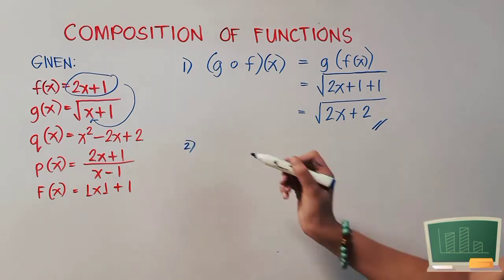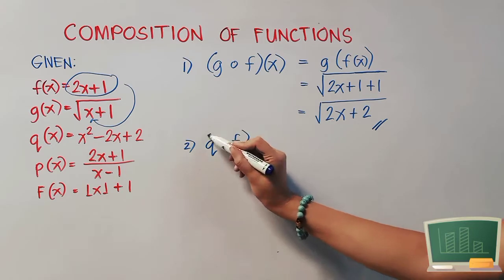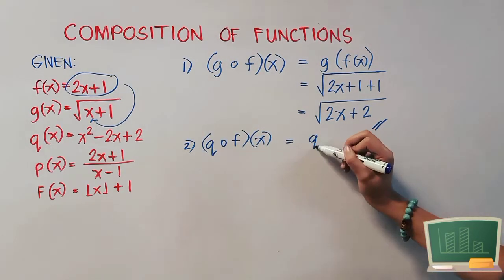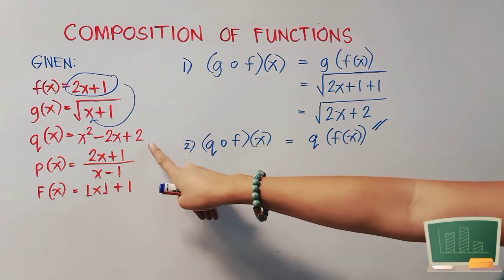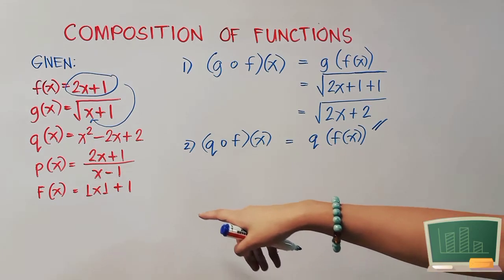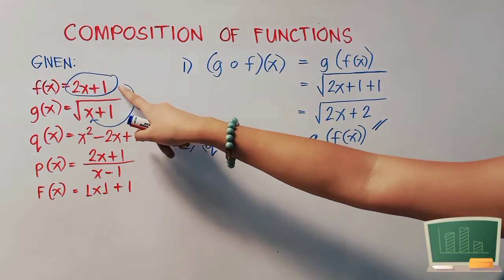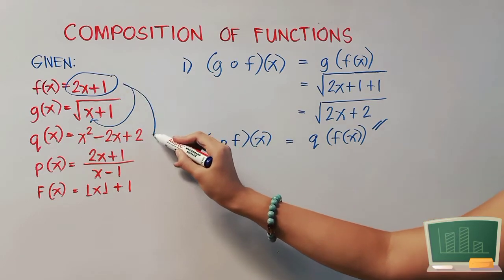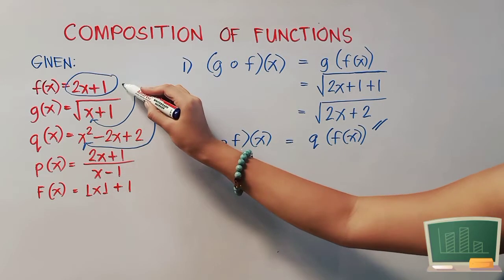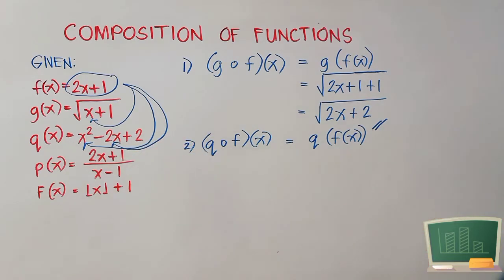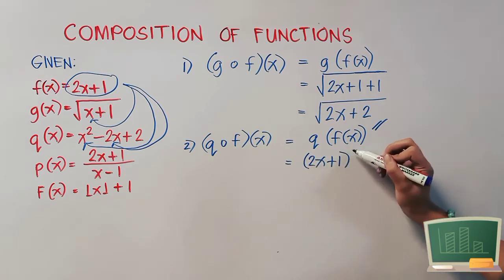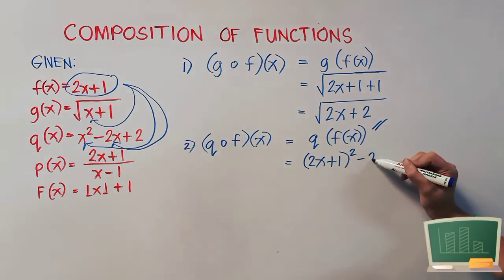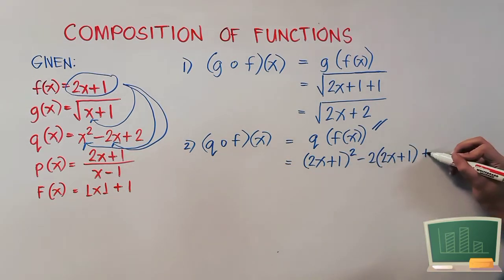Now let's have number 2. That is q of f of x. We will be using function q, which is x squared minus 2x plus 2, but our x will be the entire function f. So this one will be our x value. That gives us the quantity 2x plus 1 raised to the 2nd power, minus 2 times 2x plus 1, and then we'll just copy plus 2.